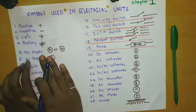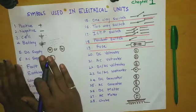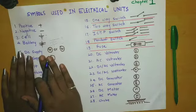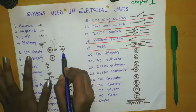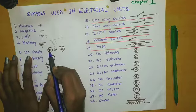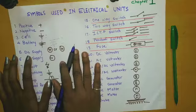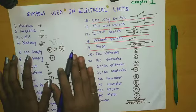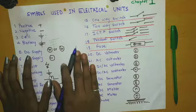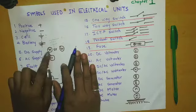DC supply. DC current is denoted by a single line, or we can simply write DC in a circle. This denotes the DC supply. We draw a single line because in DC, electric charge only flows in one direction, so it is represented as a single straight line.